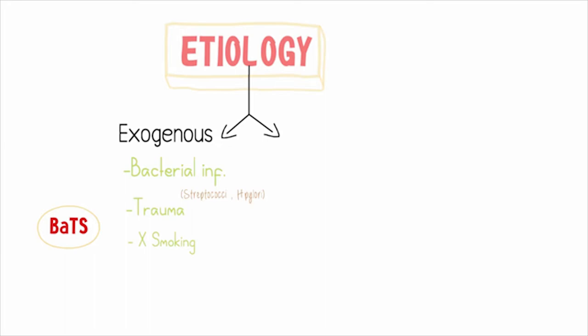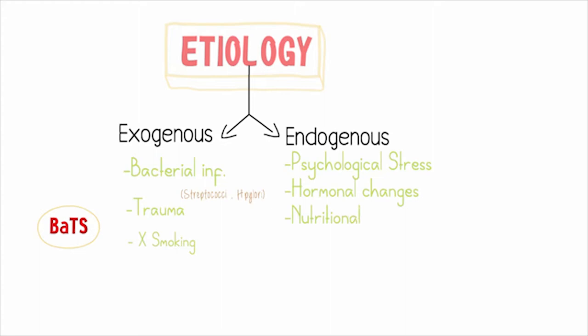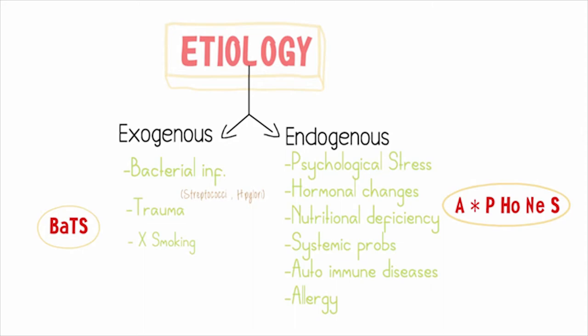The endogenous factors include any stress or anxiety, hormonal changes such as during pregnancy or after puberty, any nutritional deficiencies or systemic problems, autoimmune diseases such as celiac disease, Crohn's disease, HIV, or gluten-sensitive enteropathy, or because of any allergic factors such as food or drug allergy, hay fever, etc. The endogenous factors can also be remembered with a mnemonic.